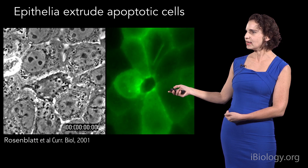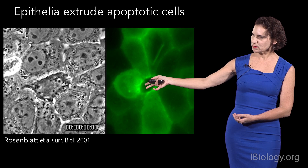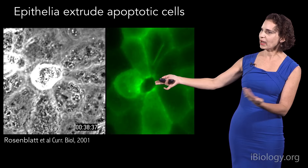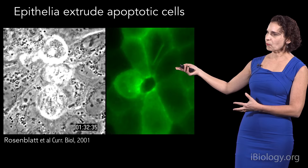So how can it maintain this barrier? The way it does so is through a process that we discovered called epithelial cell extrusion. In these MDCK cells treated with UV to induce cell death, when they die, they pop up out of the layer, and as they do so, the cells surrounding them move into the space where that dying cell once was, so that no gaps ever form in this layer.